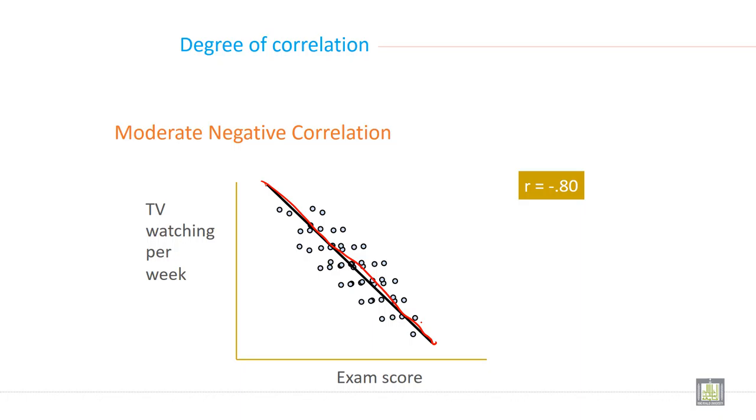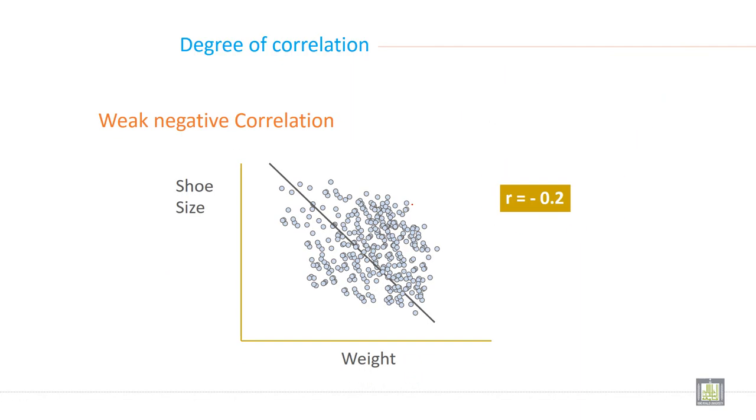Moderate negative correlation. Again, the line is here, line is already available, but the dots are not exactly on the line. It is up and down, it is above and below the lines. And the range of moderate negative correlation is 0.5 to 0.75 in negative terms.